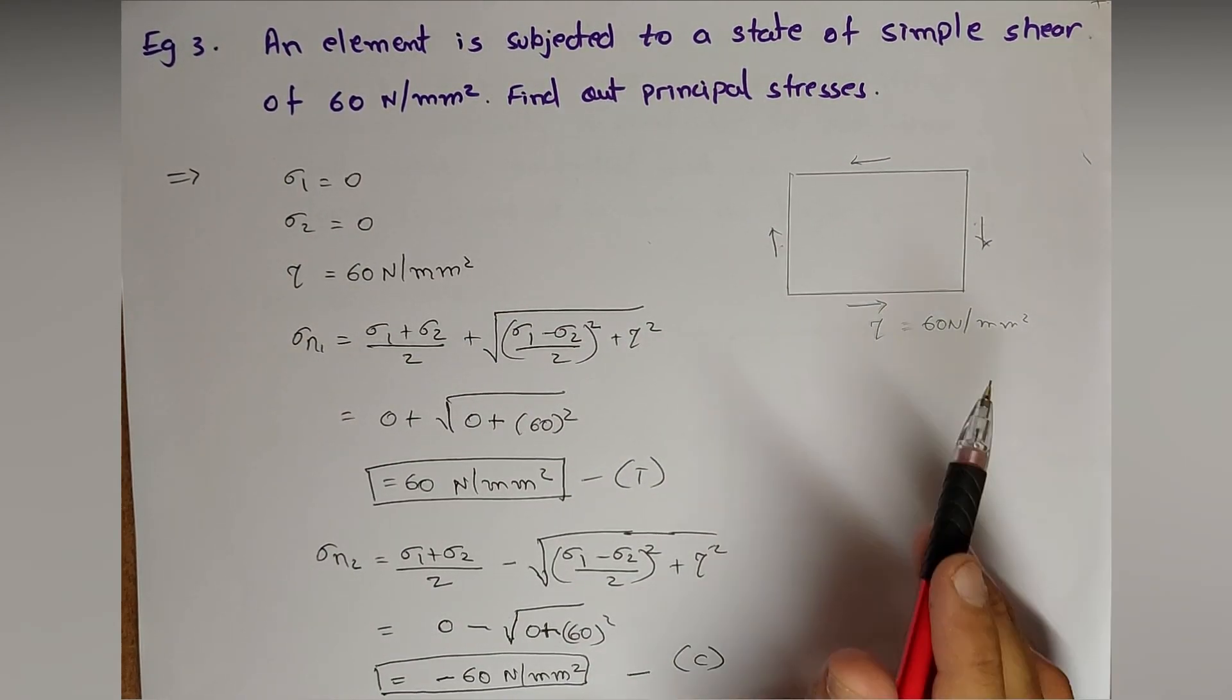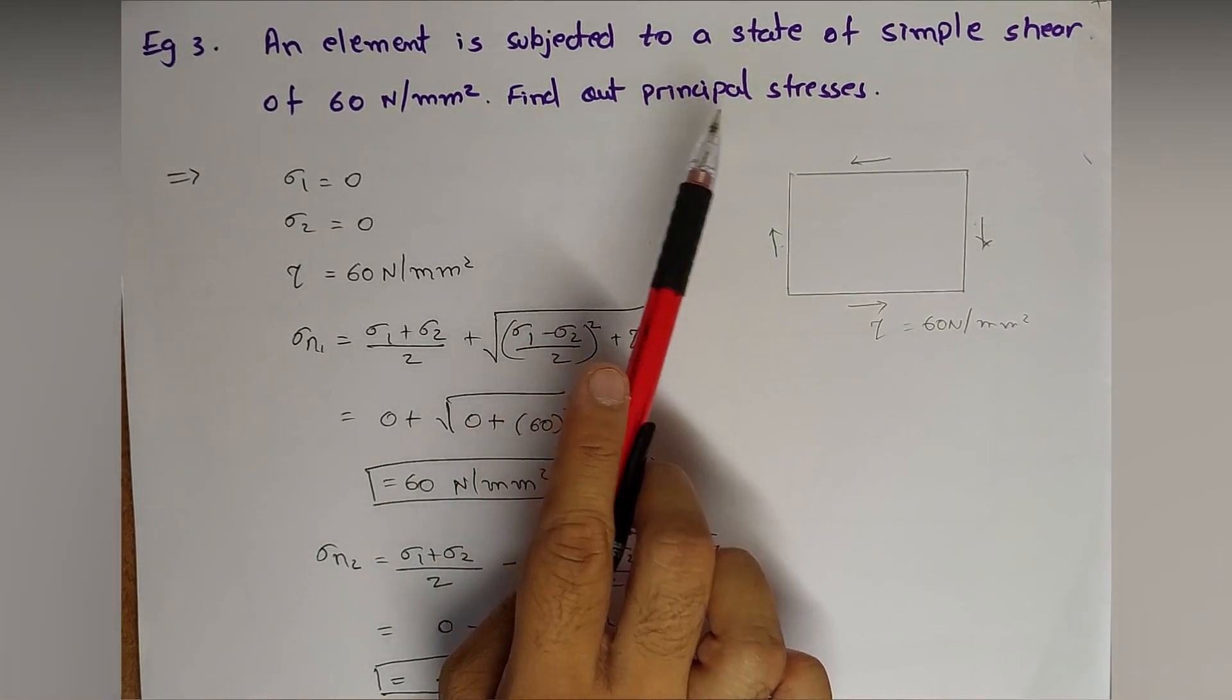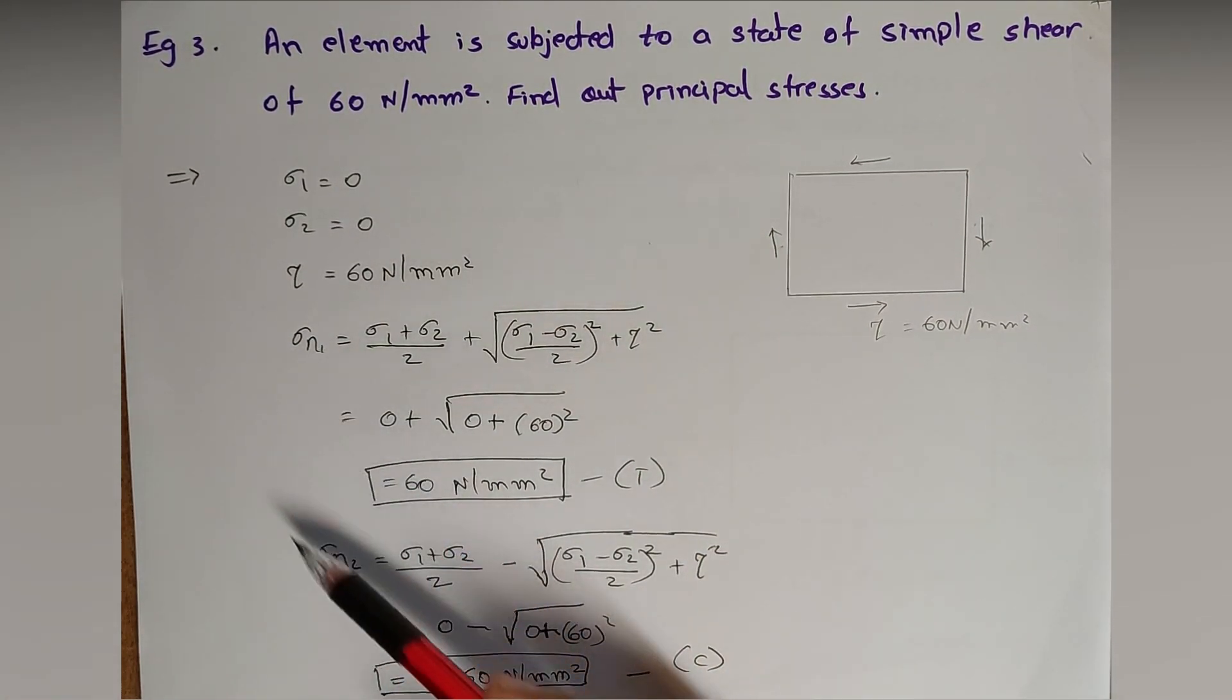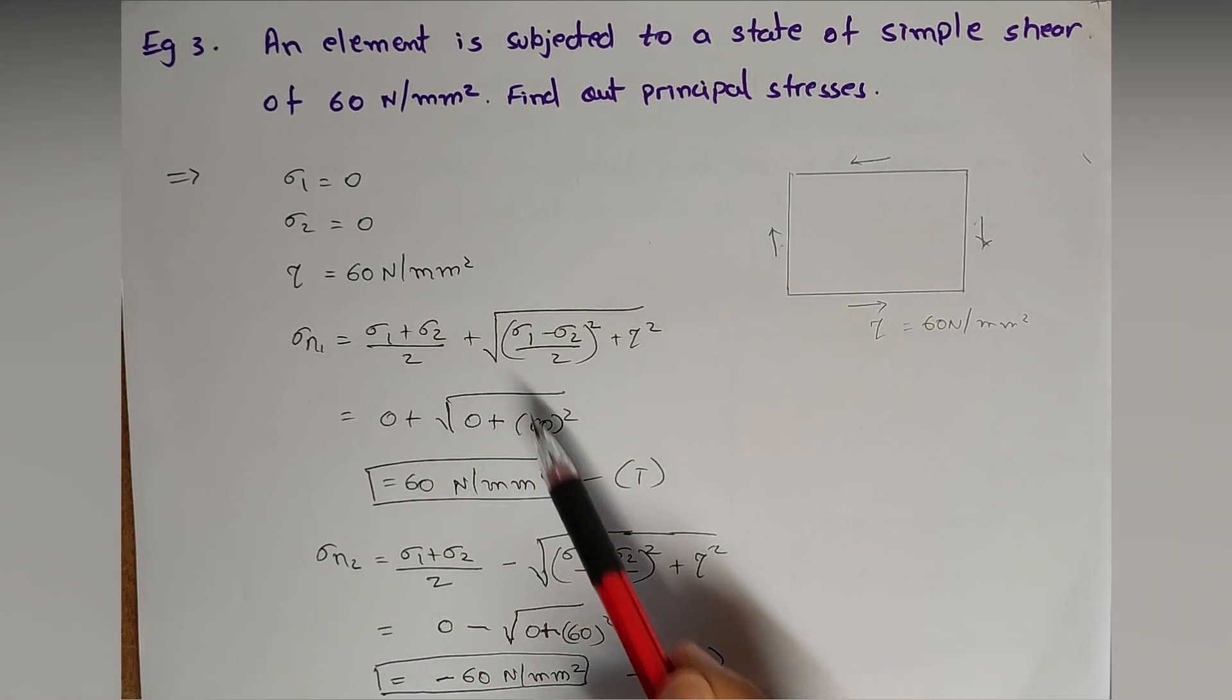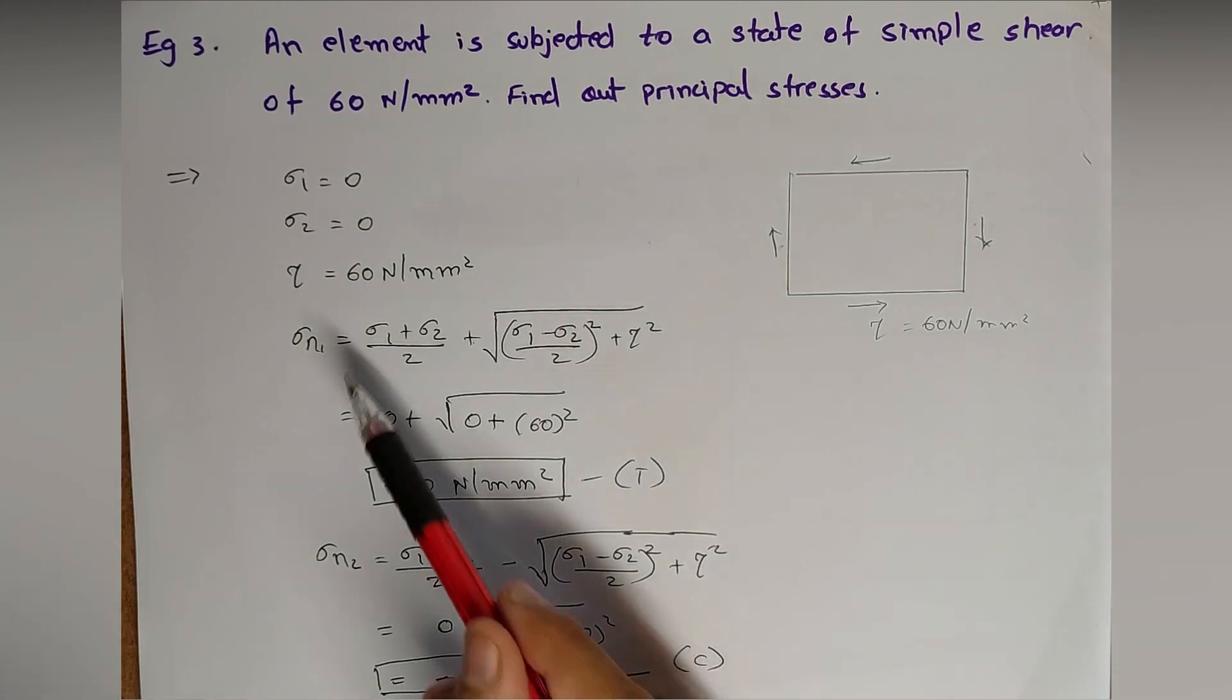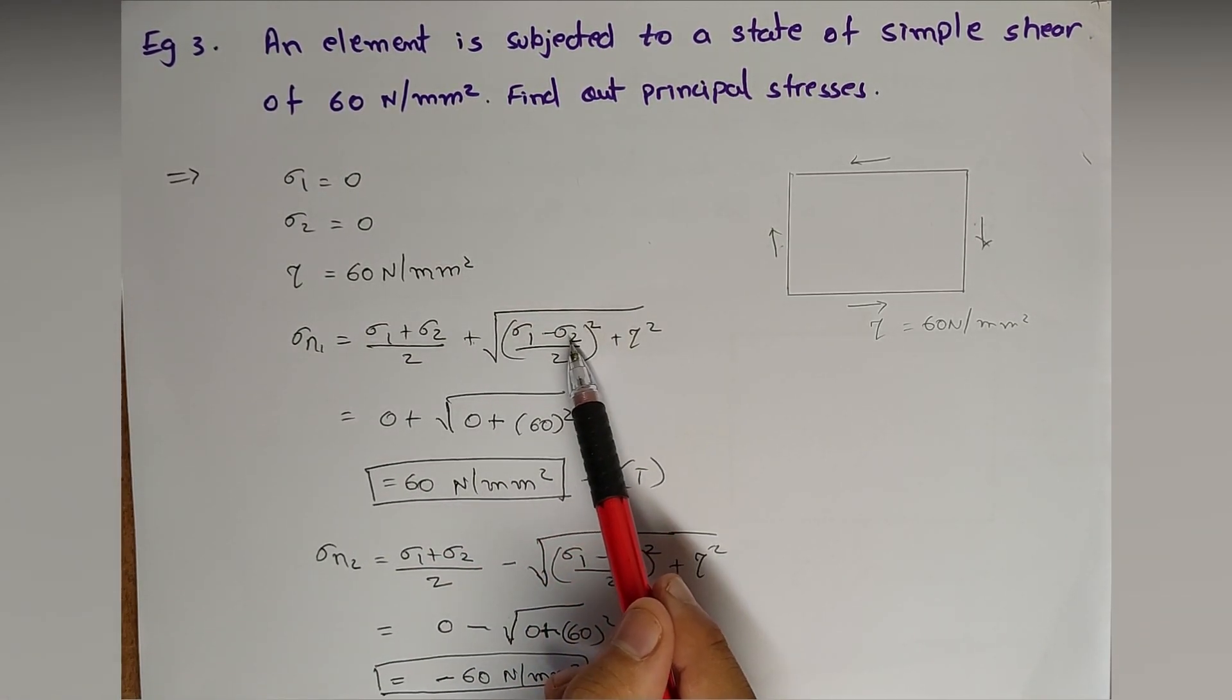So what we need to find is principal stresses, that is major principal stress Sigma one and minor principal stress Sigma two. Sigma one and Sigma two formula we do have, but the difference is only in the positive and negative sign. For major principal stress we have positive, minor principal stress we have negative sign. Sigma one plus Sigma two by two plus under root Sigma one minus Sigma two by two whole square plus tau square.